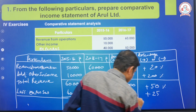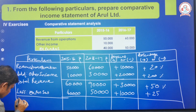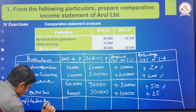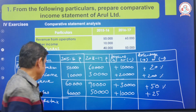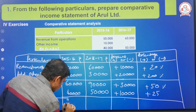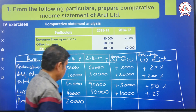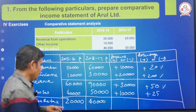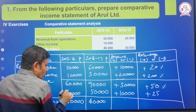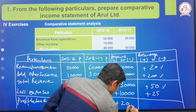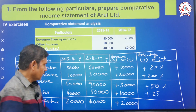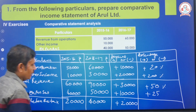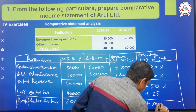Profit before tax: first year 60,000 less 40,000 equals 20,000; second year 90,000 less 50,000 equals 40,000. The difference is 20,000 increase. Percentage: 20,000 divided by 20,000 into 100 equals 100 percent.